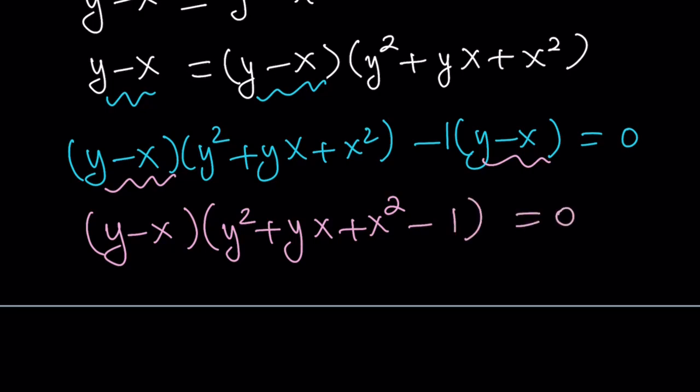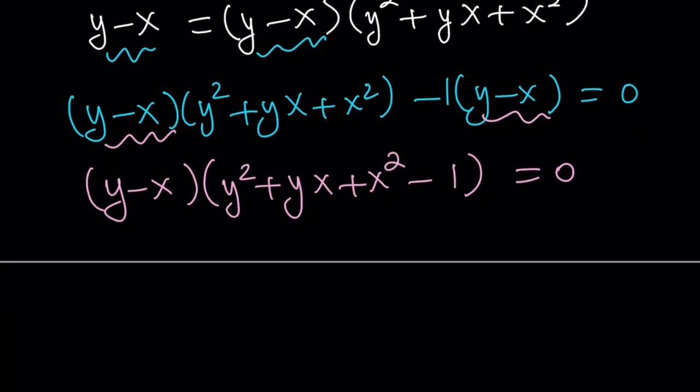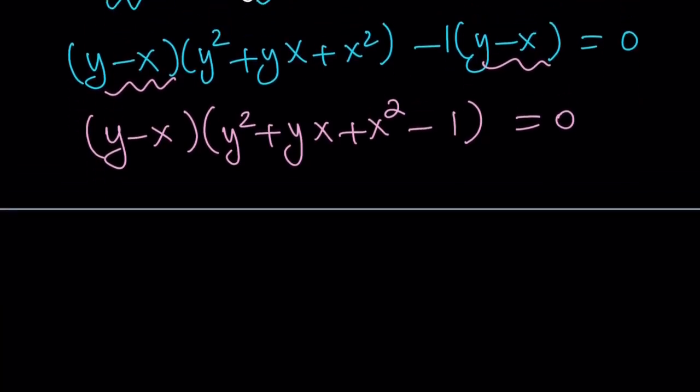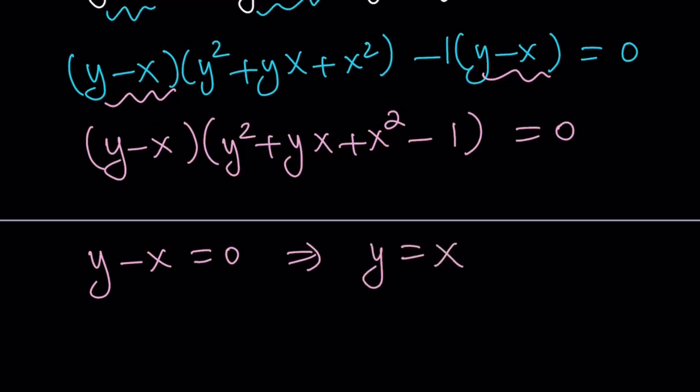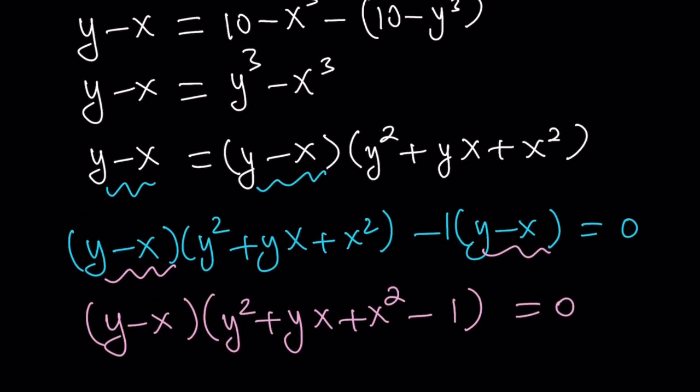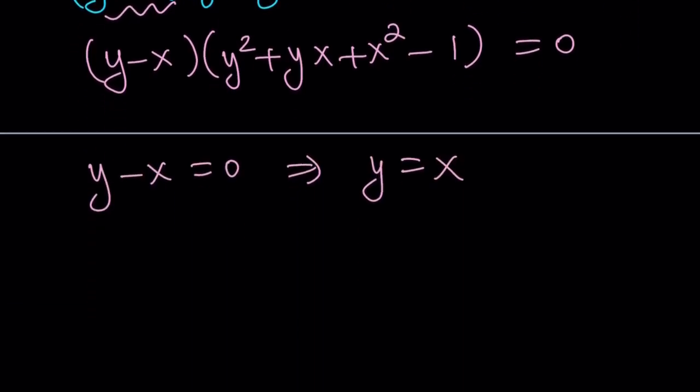Now, you almost always want to get 0 on one side of the equation. And now we have this product equal to 0. So y minus x equals 0 gives us y equals x. You could also consider the case where y minus x equals 0, and then cancel out y minus x assuming that y does not equal x, and then solve for the other solutions. You could also do that. Some people will do that. Anyways, we got y equals x, which is very powerful.